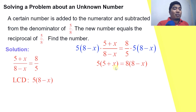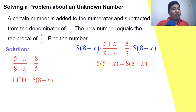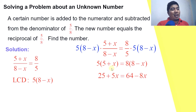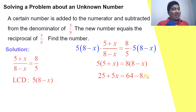Now we have a solution without a denominator. We simplify by applying the distributive property: distribute five on the left side and eight on the right side. This gives us 25 plus 5x equals 64 minus 8x. Five times 5 is 25, five times x is 5x; eight times 8 is 64, eight times negative x is negative 8x.